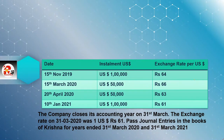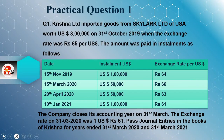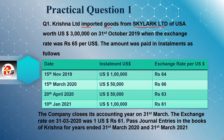तो शुरू करते हैं आज का question। Practical question number one: Krishna Limited imported goods from Skylar Limited of USA worth US dollar 3 lakhs. Import का question है — किससे import किया: Skylar Limited of USA। कितने dollar का import किया: 3 lakh dollar। कब import किया: 31st October 2019 को। उस दिन exchange rate कितना था: 65 — यही हमारा base rate है।